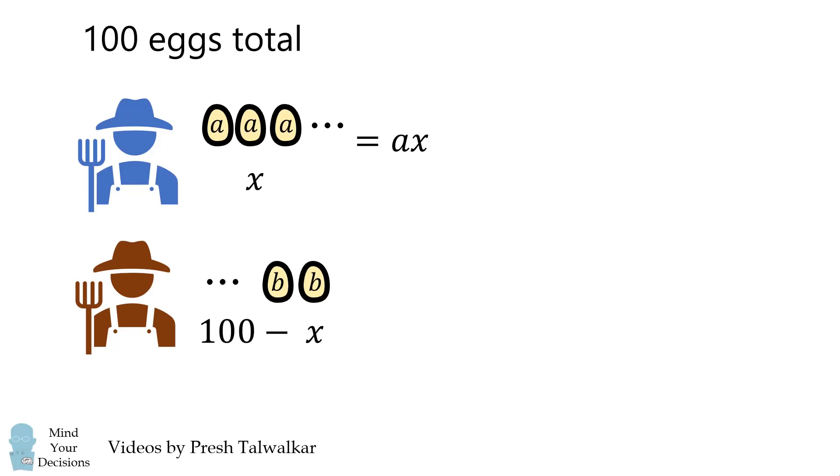The amount of money the second farmer would get is equal to b multiplied by the number of eggs 100 minus x. Since the two farmers receive the same amount of money as each other, these two quantities are equal to each other.